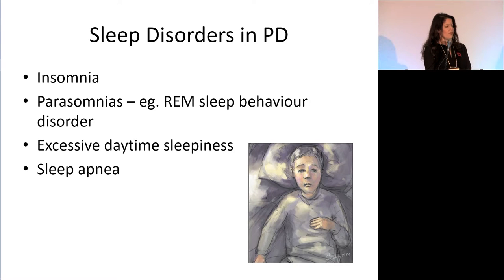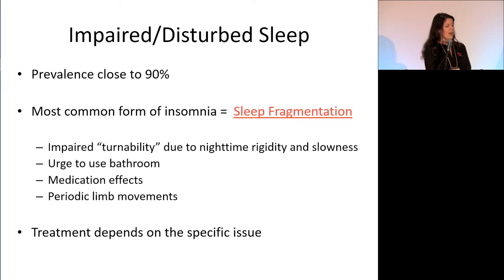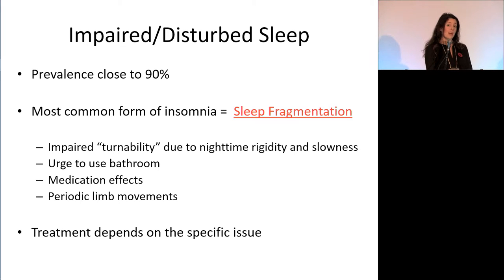There are a number of different sleep disorders that can happen in Parkinson's: insomnia, parasomnias such as REM sleep behavior disorder, excessive daytime sleepiness, and sleep apnea. About 90% of people with PD have disturbed sleep — the most common reason being sleep fragmentation, waking up regularly throughout the night. Many people with PD have difficulty turning over in bed due to stiffness and slowness, leading to poor sleep. Frequent bathroom urges, medications not working through the night, and periodic limb movements can also cause disruption.